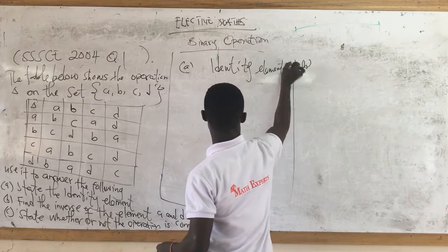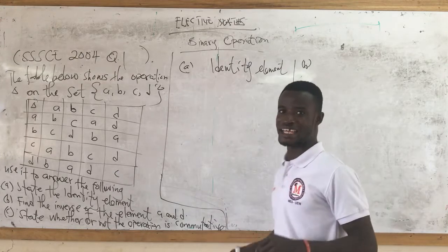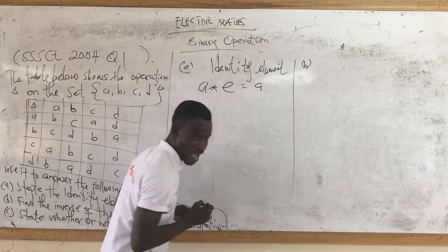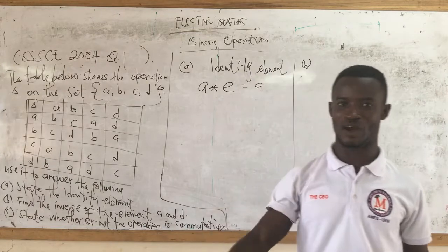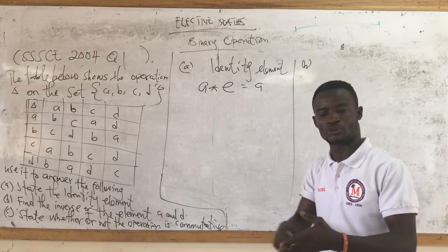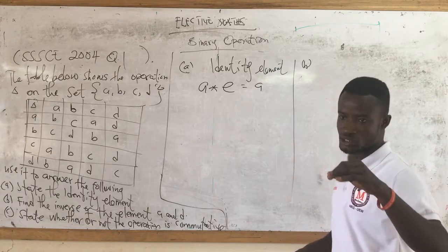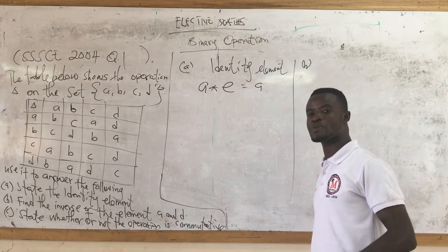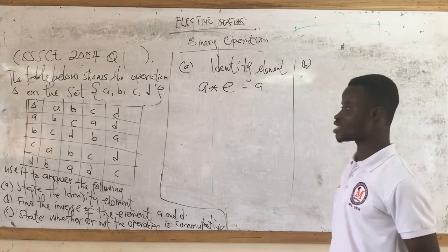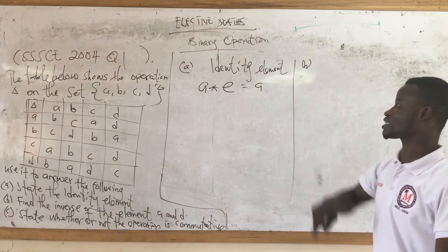What's the idea about identity elements? When a number combines with an identity element it gives you the same number. The identity element can be one — any number multiplied by one is still the same number. This operation can be addition, multiplication, or subtraction. If the identity element is one, I'm referring to multiplication. If you add any number to zero you get the same number — that is the identity element.